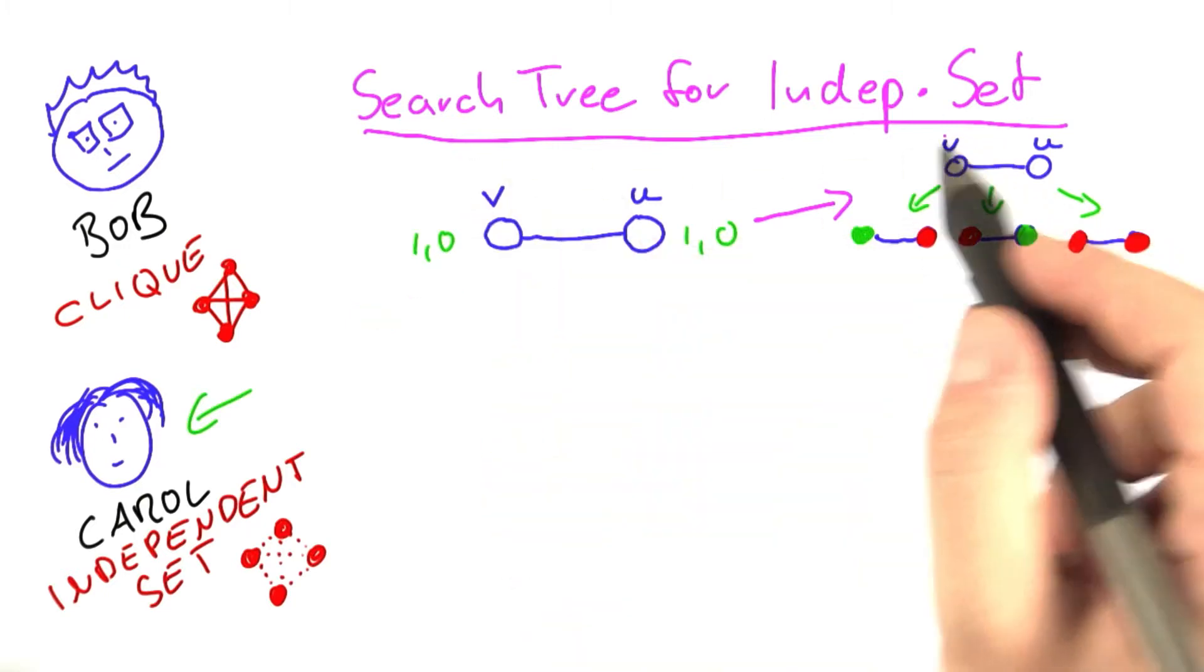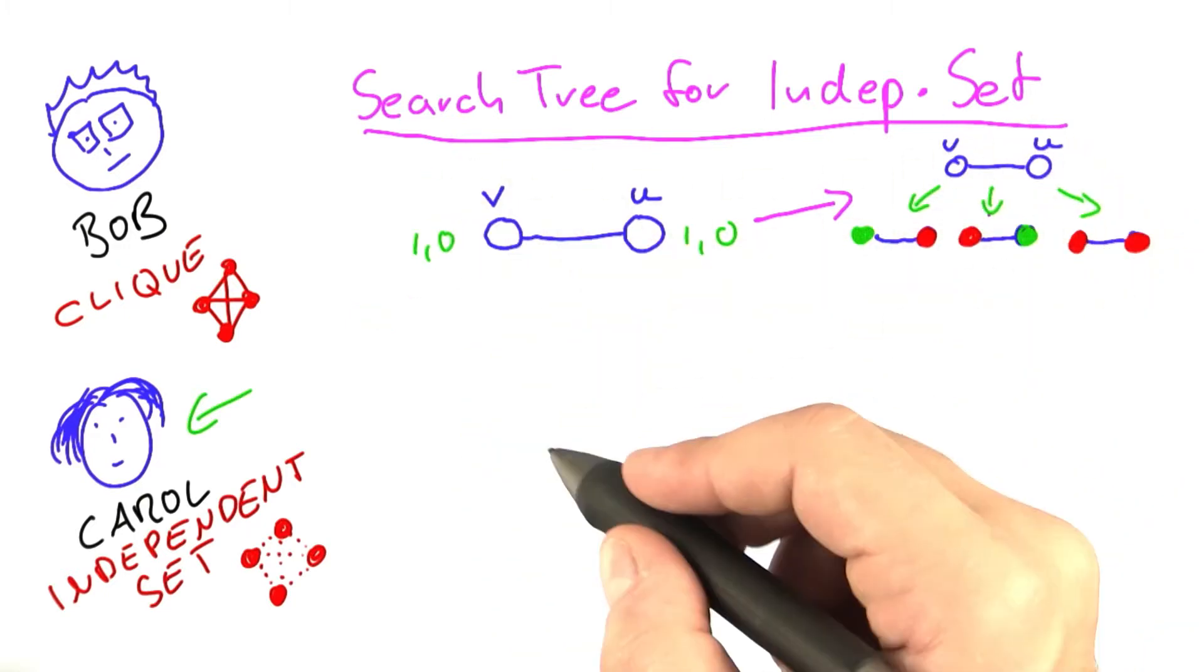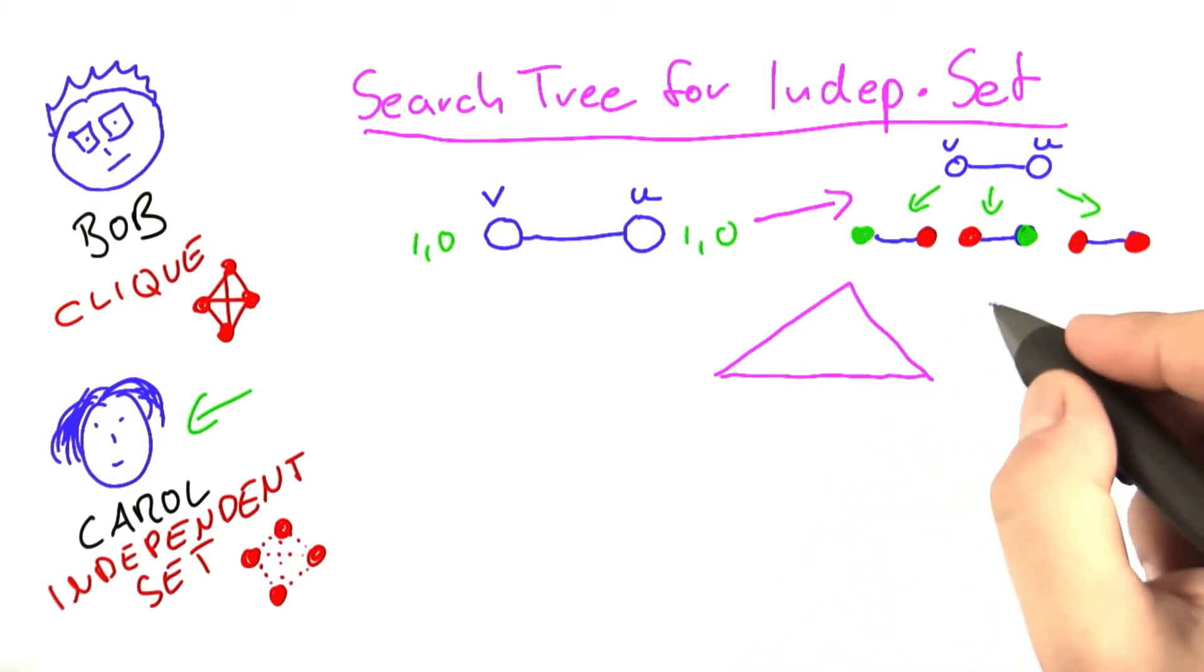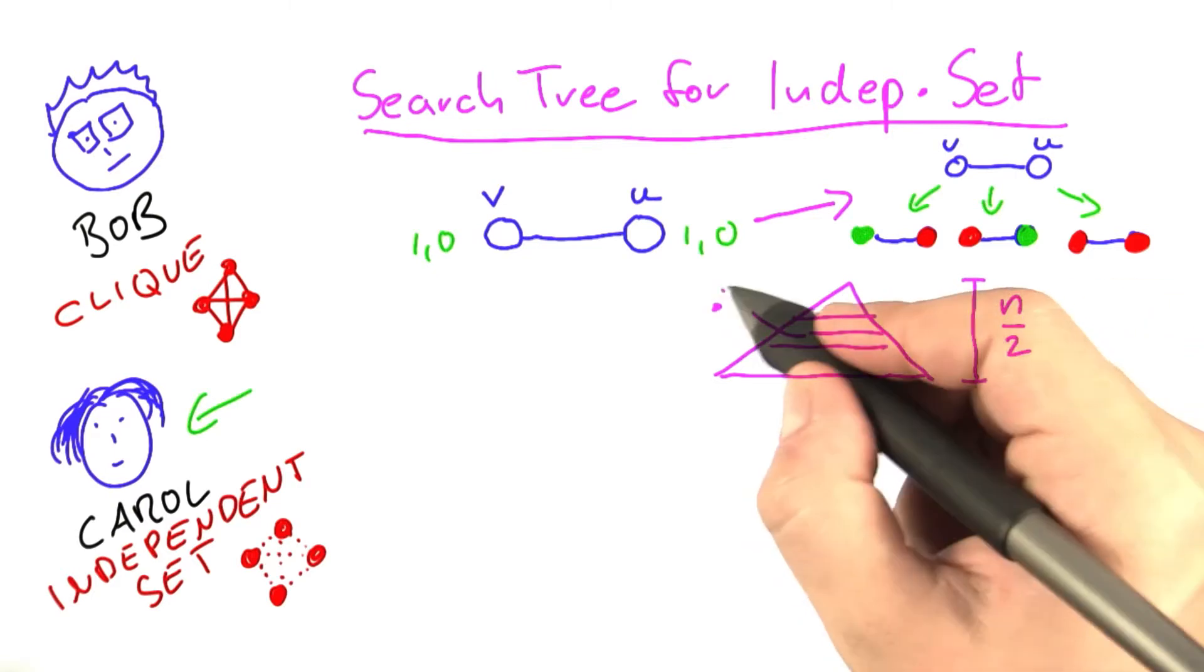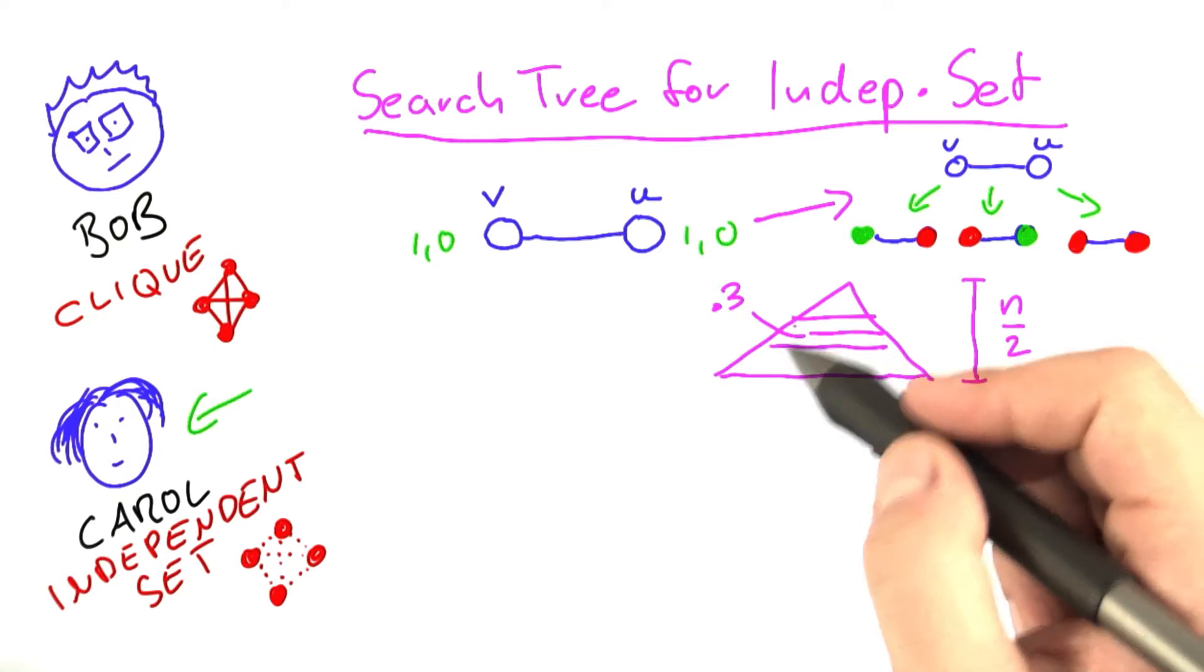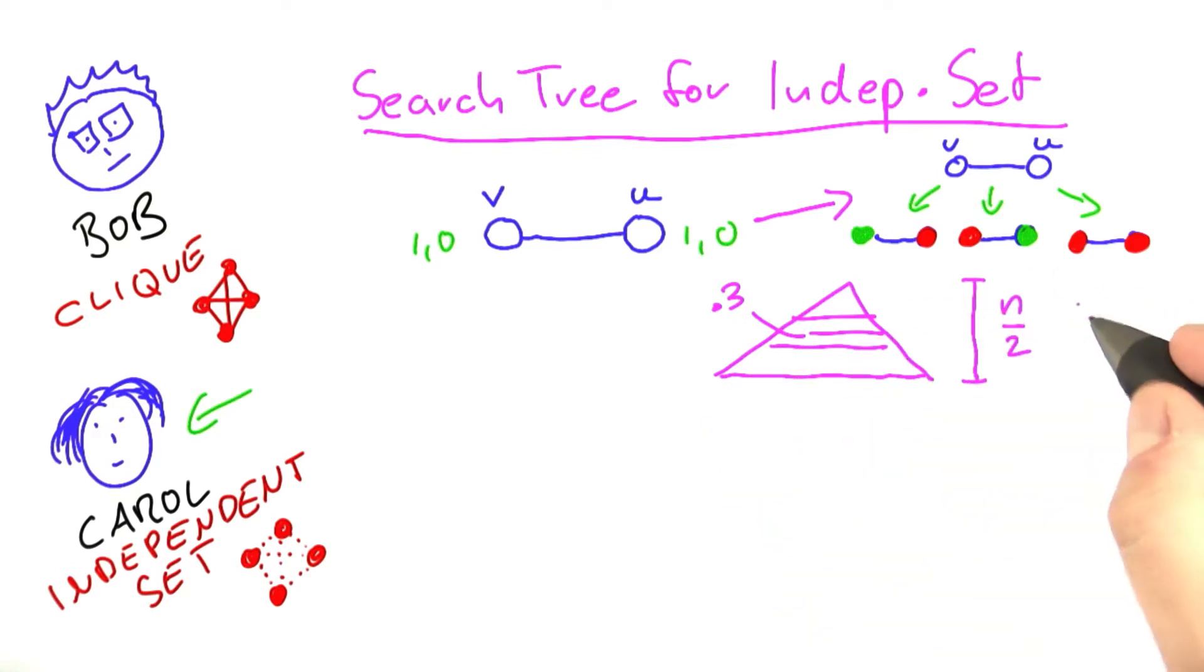And this of course means that for independent set, we can use a search tree that just like vertex cover always finds an assignment for two vertices or at least two vertices. So its height, so to say, of the search tree is n half. The size of the layers multiplies by factor three. So the size of the overall tree is three to the power of n half.